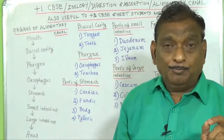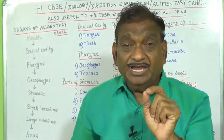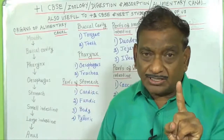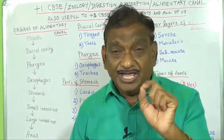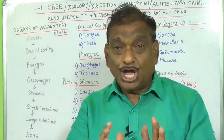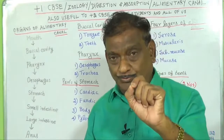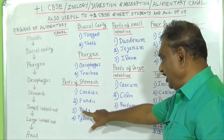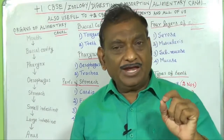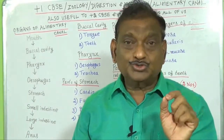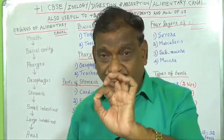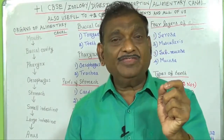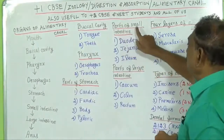Coming to the parts present in the stomach: in the stomach there are 4 parts — 1. cardiac, 2. fundic, 3. body, 4. pyloric. After that, the parts contained in the small intestine: in the small intestine there are 3 parts — 1. duodenum, 2. jejunum, 3. ileum.